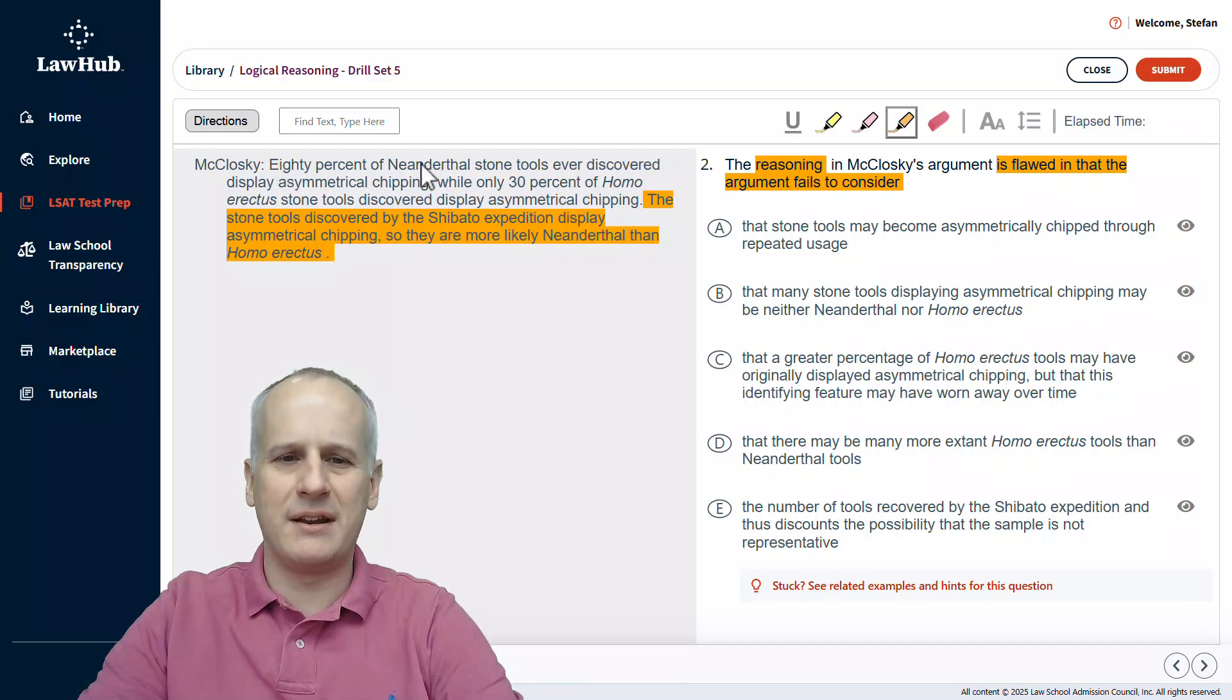It says 80% of Neanderthal stone tools have this chipping. 30% of Homo erectus stone tools have this chipping. We don't know what the actual total is for either Neanderthal stone tools discovered or Homo erectus stone tools that were discovered. For instance, 80% if there's 1,000 Neanderthal stone tools, then that's just going to be 800, but 30% of 100,000 would be 30,000.